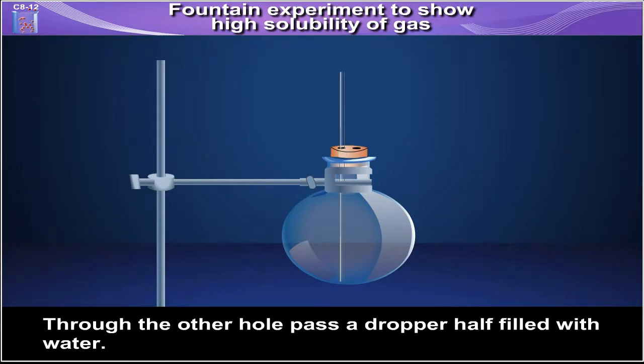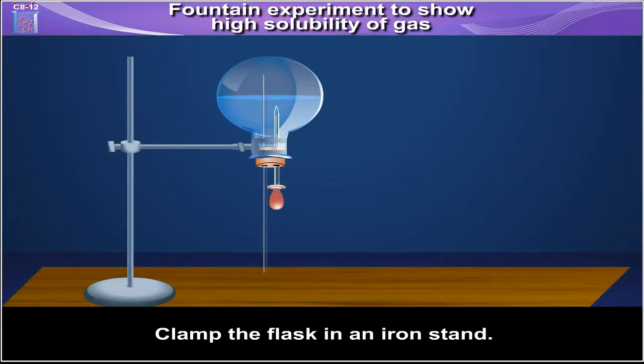Through the other hole, pass a dropper half filled with water. Clamp the flask in an iron stand.